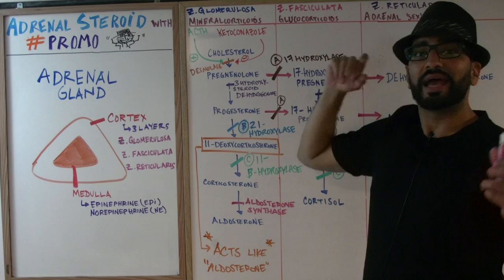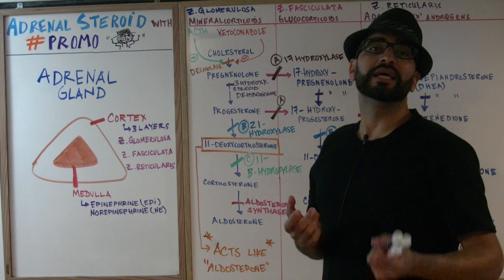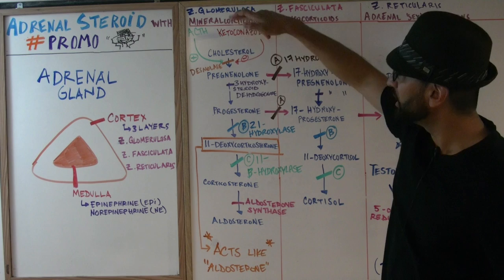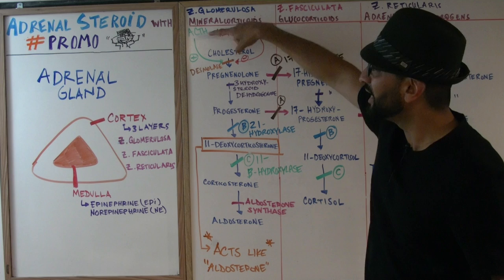Ketoconazole is a medication — an antifungal — which can also be used to treat some reproductive pathologies such as PCOS, polycystic ovarian syndrome. Ketoconazole inhibits the first step — cholesterol to pregnenolone — by inhibiting desmolase, which is why steroid synthesis is reduced and ketoconazole is prescribed in patients with PCOS. You also need ACTH, adrenocorticotrophic hormone, to get the whole process started.